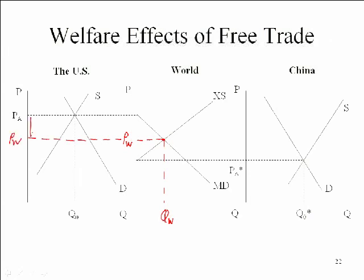Notice the world price, as we knew it would be, is below the US's autarky price. Because of that, the quantity demanded increased and the quantity supplied decreased, with the difference between the two being the US's imports of tires from China. Imports went from zero to something bigger, because with a lower price, US tire firms have less incentive to make tires, and US consumers want to buy more tires.